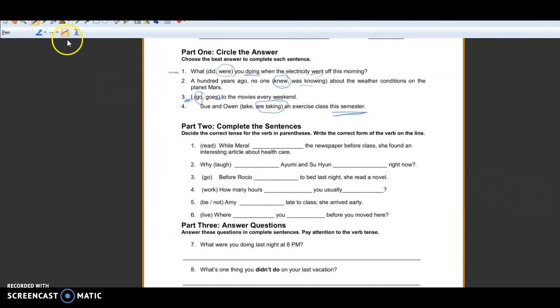For our next part we have to complete the sentence with the correct form of the verb. This is a little bit harder because we just have the verb here and we need to put it in the right tense. So here we see, while Merrill the newspaper before class, she found an interesting article about health care. We see that there is a verb in this sentence which is found, a simple past verb. And we see that in the other clause we have the word while. While means that something was in progress in the past. So in that one we need to use the past progressive tense.